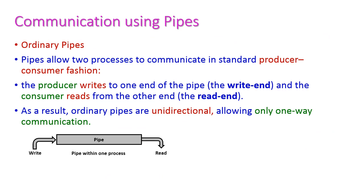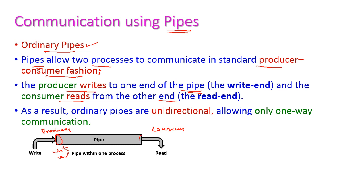The third type of communication is by using pipes. Ordinary pipes allow two processes to communicate with each other in a standard producer-consumer fashion. The producer will write to one end of the pipe, called the write end, and the consumer reads from the other end, called the read end. Ordinary pipes are unidirectional — only one-way communication is possible.